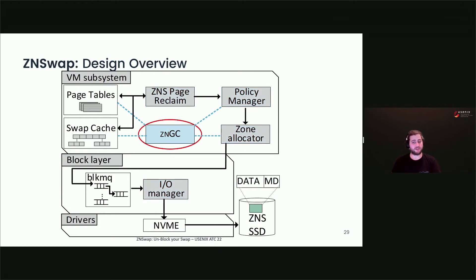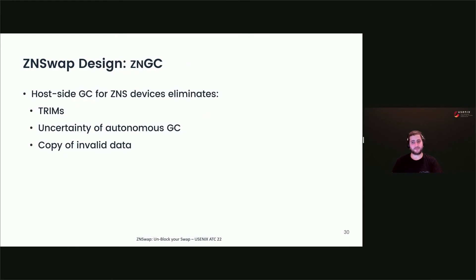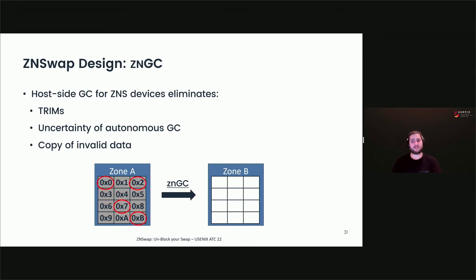I'll briefly present the design of our host-side garbage collection mechanism dubbed ZNGC. ZNSwap's host-side GC is tightly integrated with the kernel's virtual memory subsystem. It is designed to not dynamically allocate memory in a memory-constrained system and to exhibit low overheads during the garbage collection process. ZNGC also eliminates the need for trims, eliminates the performance jitters caused by the traditional SSD's garbage collector, and eliminates copies of invalid swap data during the garbage collection process. Once a zone is selected for garbage collection, ZNGC only copies the necessary data from the swap device from a specific zone into a new zone. Information on the status of each swap datum is available to ZNGC due to its tight integration with the virtual memory subsystem.